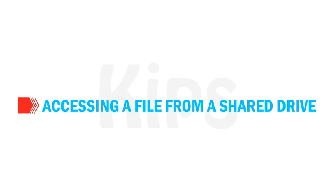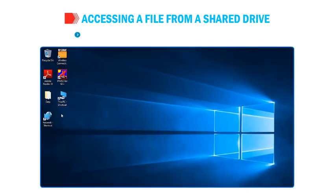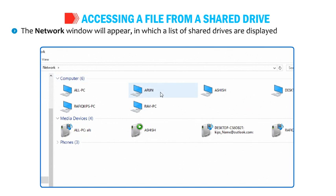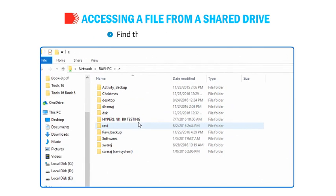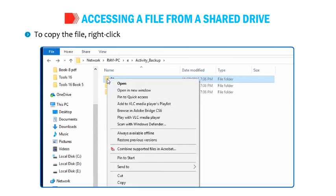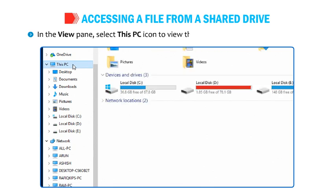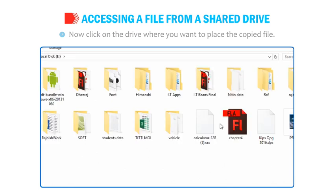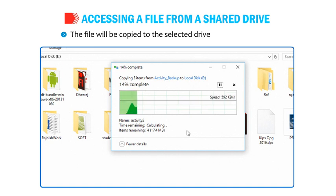To access a file from a shared drive, follow these steps: Double-click on the network icon on the desktop. The network window will appear, displaying a list of shared drives in the Details pane. Select the required shared drive to see its contents. Find the required file in the drive. To open the file, double-click on it. To copy the file, right-click on it and select the Copy option from the Shortcut menu. In the View pane, select This PC icon to view storage drives on your computer. Click on the drive where you want to place the copied file. Right-click anywhere on the Details pane and select the Paste option. The file will be copied to the selected drive.